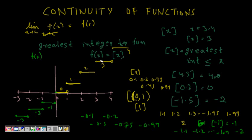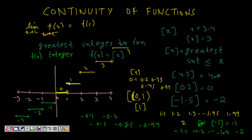So this is the complete graph of f(x) = ⌊x⌋. We can see it is not continuous at integer points — not continuous at 0, 1, 2, 3, -1, -2, -3 — because the left-hand limit and the right-hand limit are not the same. The greatest integer function is discontinuous at integers and continuous at all other points.